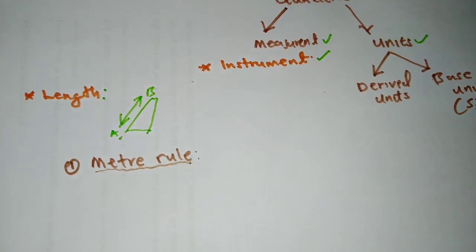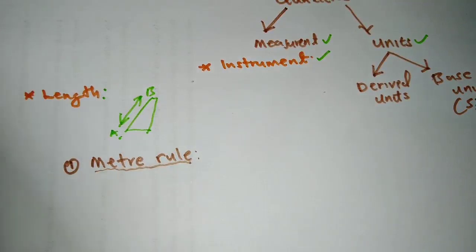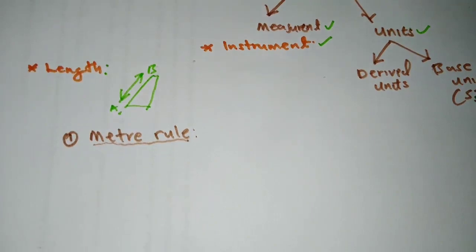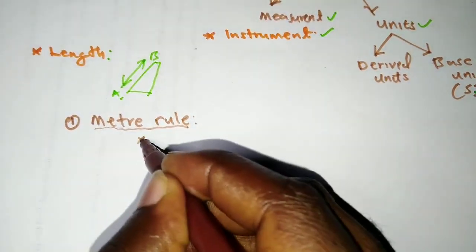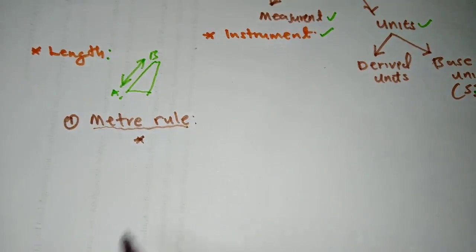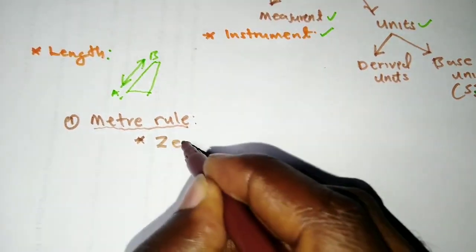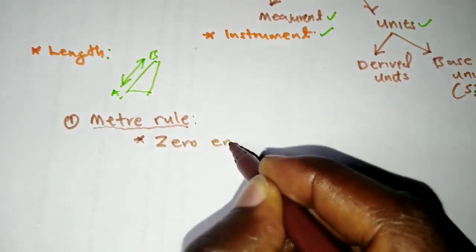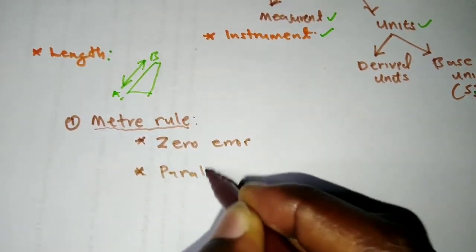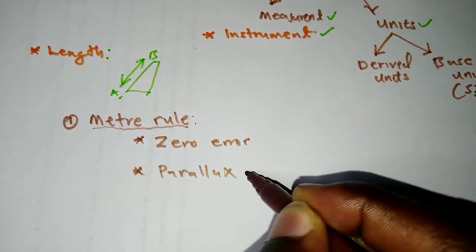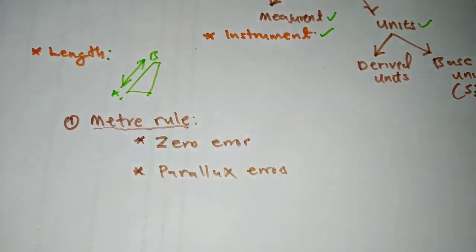Each and every instrument that we use in physics has some degree of error. So for instance, under a meter rule, there are two types of errors that we can encounter. We have the zero error, and we also have what we call parallax errors.